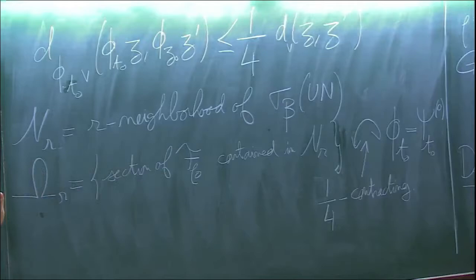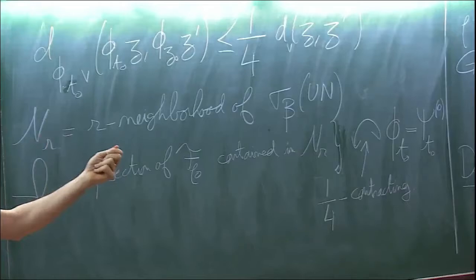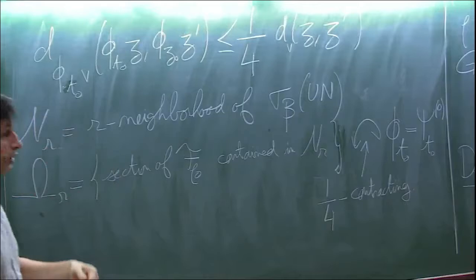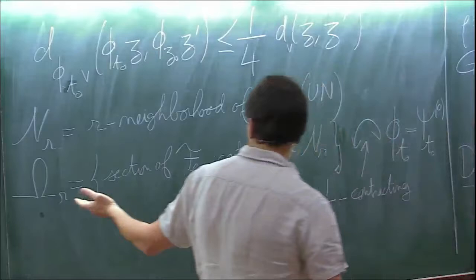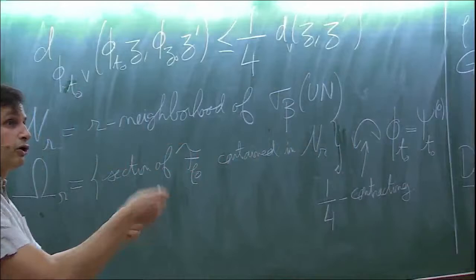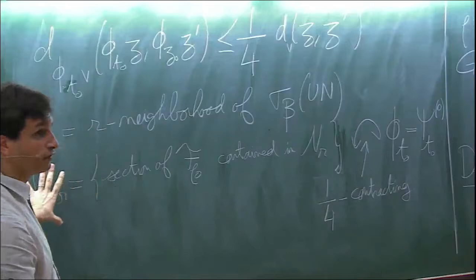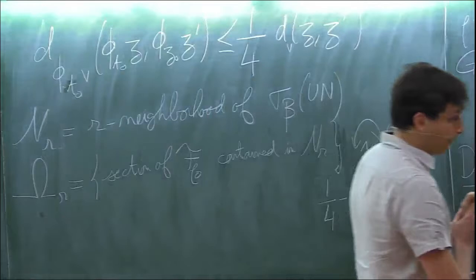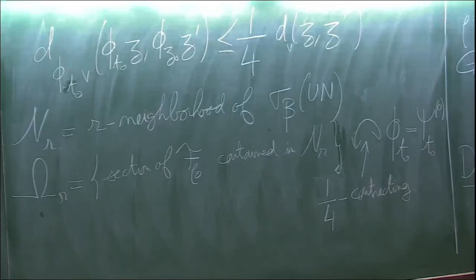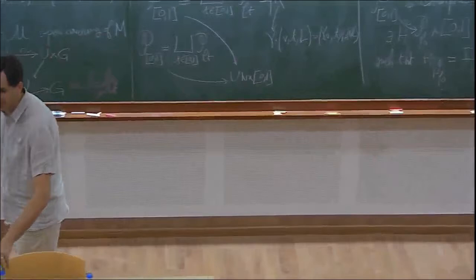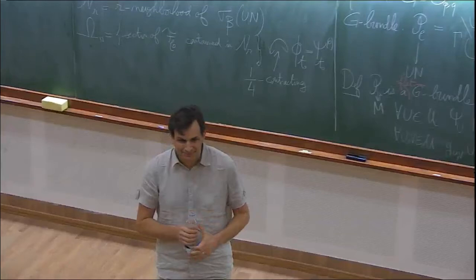Denoting by N_r the R-neighborhood of the section sigma, and by Omega_r the space of sections of F_{rho_0} whose images are contained in N_r, the flow still acts on this space and this action is one-fourth contracting. You measure the distance between two sections as the supremum of the distances pointwise. This action psi_{t_0} at s equals zero is one-fourth contracting, and as s varies it varies continuously — so for small enough s, psi_{t_0}(s) will be contracting on this space. By the Banach fixed-point theorem you find a unique fixed point, and by its uniqueness this fixed point must be invariant under the flow and has the required contraction property. Out of this you can work out that the section for a small deformation comes from an equivariant map, giving the Anosov condition. Thank you for your patience.